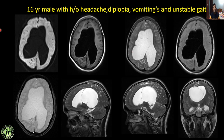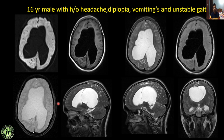Next case: a 16-year male with history of headache, diplopia, vomiting, and unstable gait. There is hydrocephalus and no restricted diffusion on DWI. The lesion is hypointense on T1, but here you can see a thin membrane separating the rest of the ventricles from the cystic lesion. On FLAIR, the thin membrane is clearly depicted separating the cystic lesion from the rest of the ventricles. This is also a case of intraventricular arachnoid cyst causing obstructive hydrocephalus.